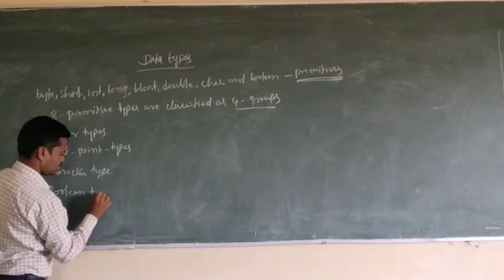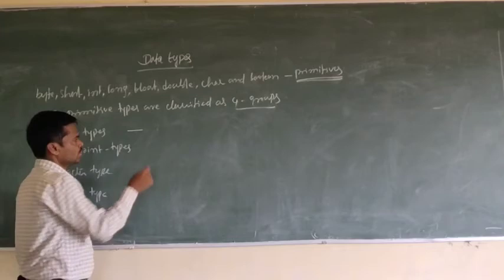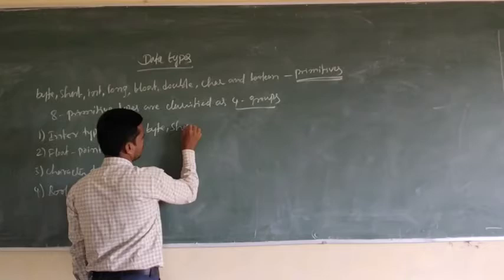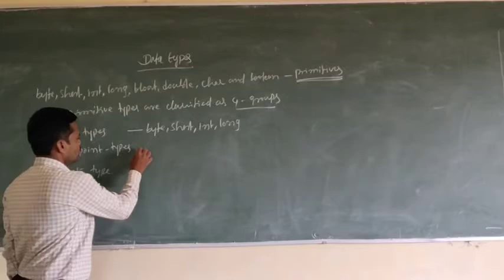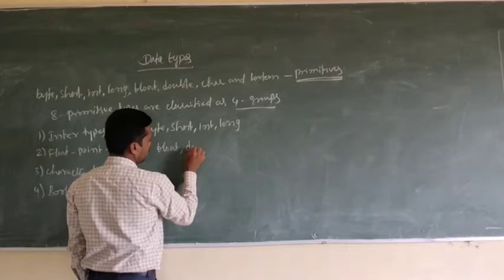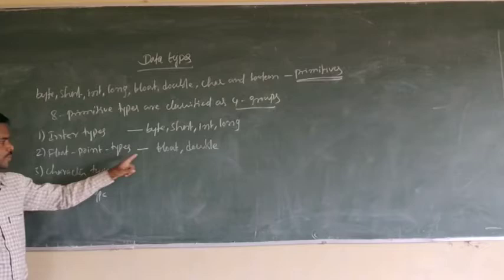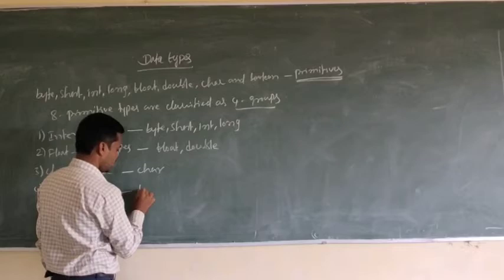In integer types, the data types that come under it are byte, short, int, and long. These 4 types come under integer types. For floating point types, the data types are float and double. These 2 data types come under floating point types. Character types contain char, and boolean type contains boolean.